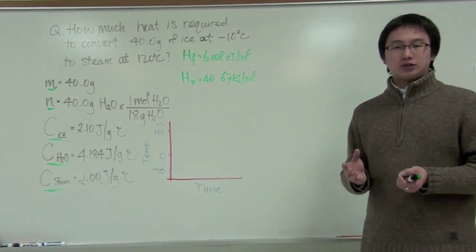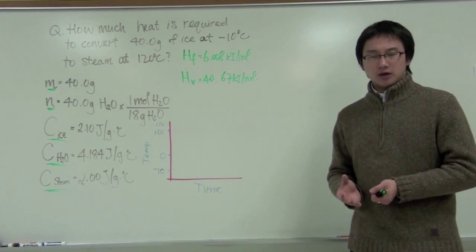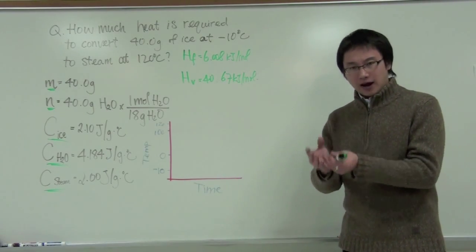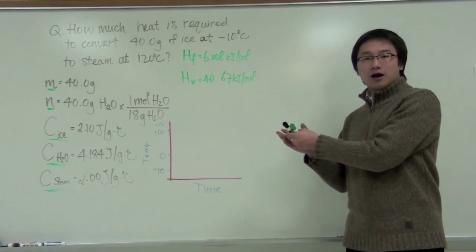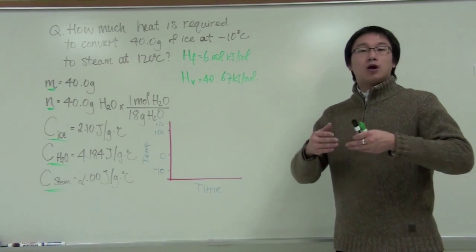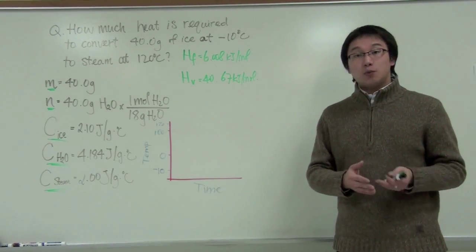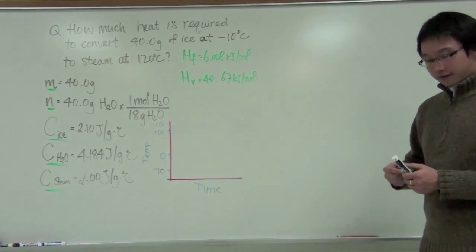You now have an ice cube at negative 10 degrees Celsius. In order for the ice cube to become steam at a higher temperature, you need to go through the liquid stage. The ice cube must become water first. So what we do is this, let's make a graph.